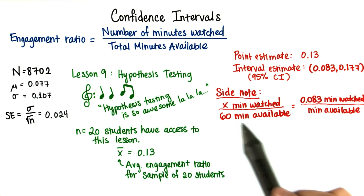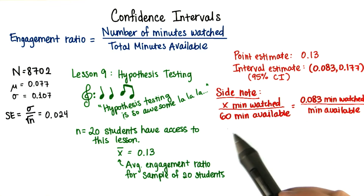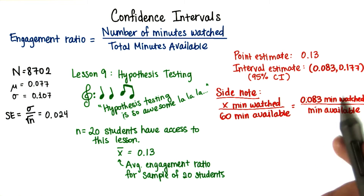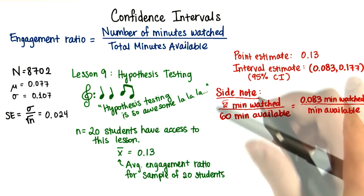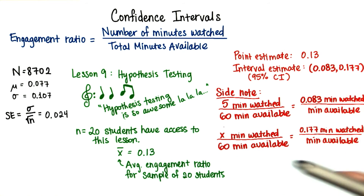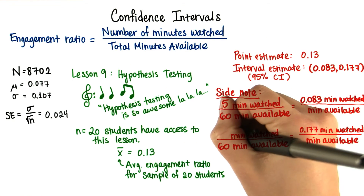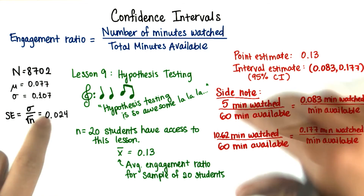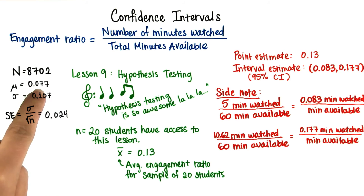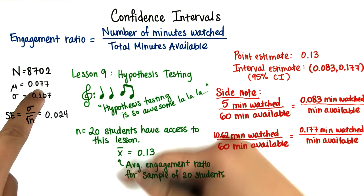If we want to know how many minutes students will watch out of every 60 minutes available, 60 times 0.083 is about 5 minutes. On the upper bound, they could watch up to 0.177 of every minute available, and out of 60 minutes that's about 10.62. Since the engagement ratio right now is 0.077 — about 4.62 minutes watched out of every hour of content available — this represents an increase.